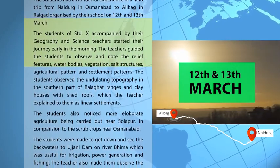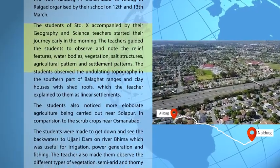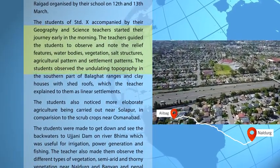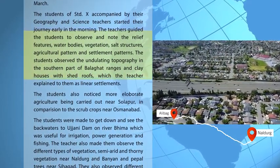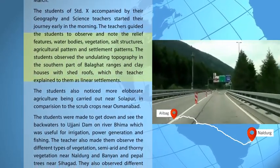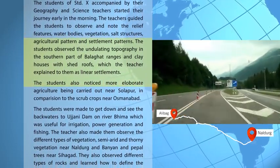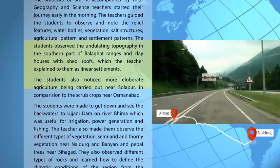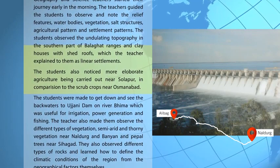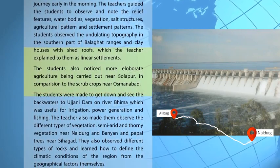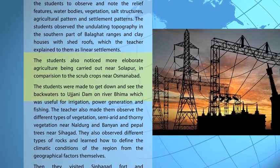The teachers guided the students to observe and note the relief features, water bodies, vegetation, soil structures, agricultural pattern and settlement patterns. The students observed the undulating topography in the southern part of the Balaghat ranges and clay houses with shed roofs, which the teacher explained to them as linear settlements.